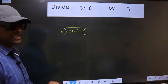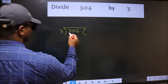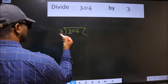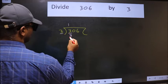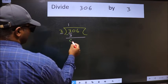This is your step 1. Next, here we have 3. Here also 3. When do we get 3 in the 3 table? 3 ones are 3. Now we should subtract. We get 0.